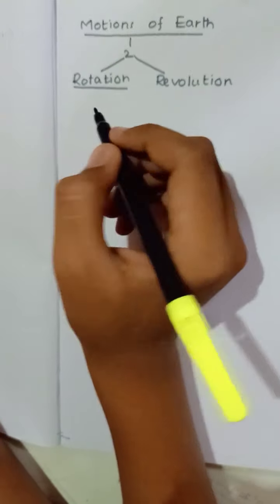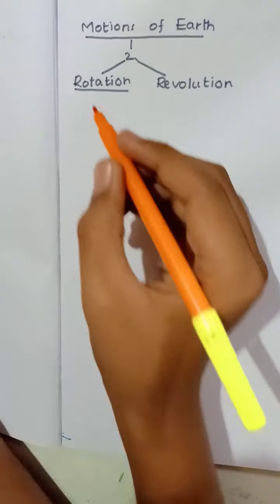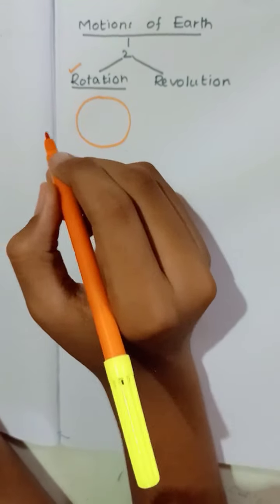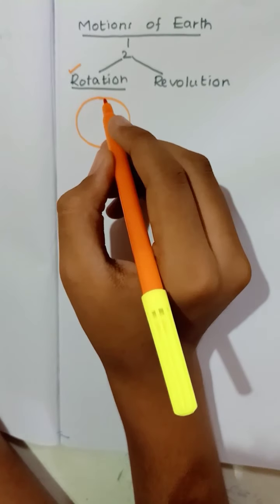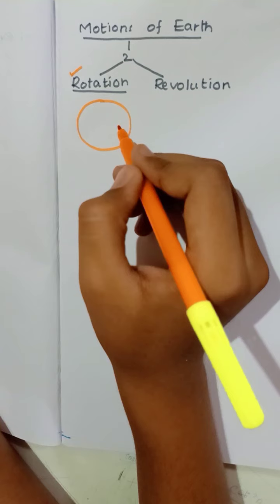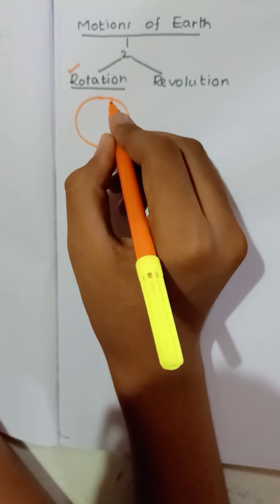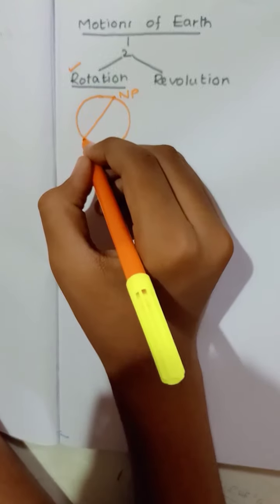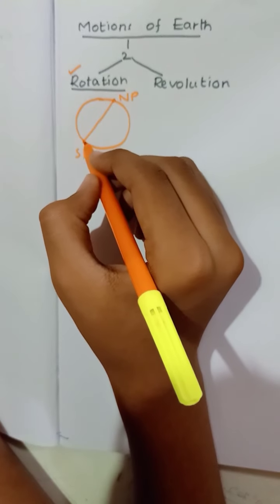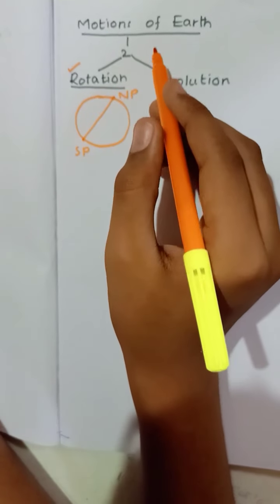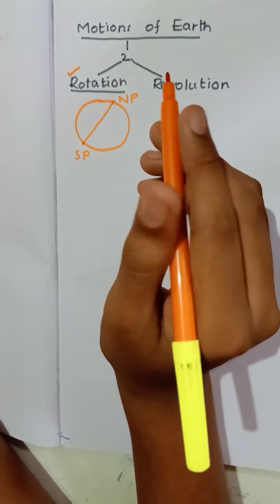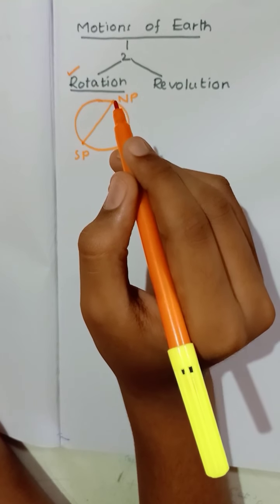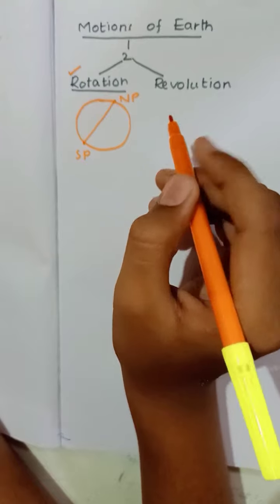First, let's learn what is meant by rotation. There is an imaginary line which passes through the Earth, which we call the axis of Earth. This axis of Earth connects the north pole and the south pole of the Earth, and the Earth will be rotating on this axis.